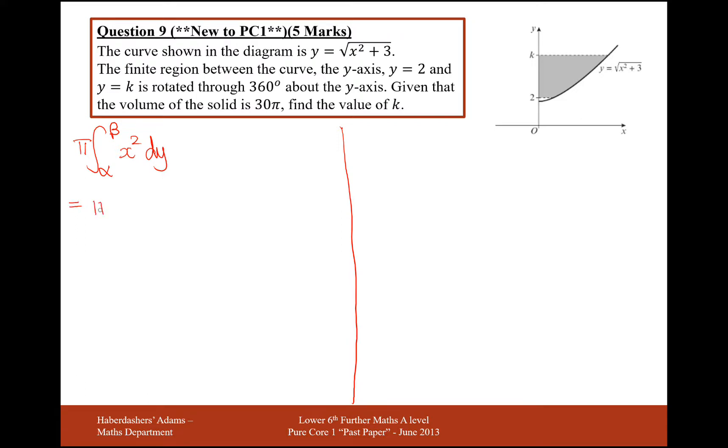So this is going to be pi times the integral from k down to two. And we need to work out what x squared is. So we've got that y equals the square root of x squared plus three. So we need to rearrange it to make x squared the subject. So square both sides, y squared equals x squared plus three.